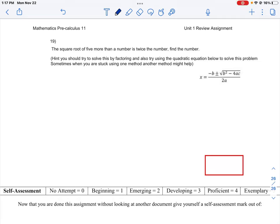Let's look at our last question here, number 19. We have a word problem. The square root of 5 more than a number is twice the number, and we're asked to find that number.